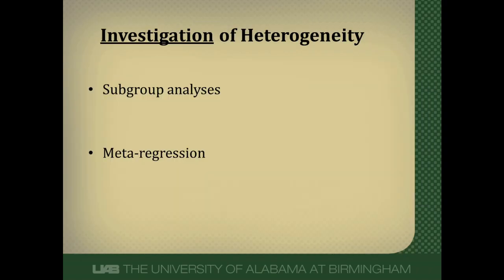The most important step is to investigate heterogeneity. There are two main ways this is done: subgroup analyses and meta-regression. Detail on these concepts is beyond the scope of this video, but there are ways to explore heterogeneity and try to explain what is causing it. For example, higher-quality studies may give a different answer than lower-quality ones, or non-randomized studies may differ from randomized ones. Investigating heterogeneity helps you understand the data and can suggest further research to build a cleaner knowledge base in a particular area.